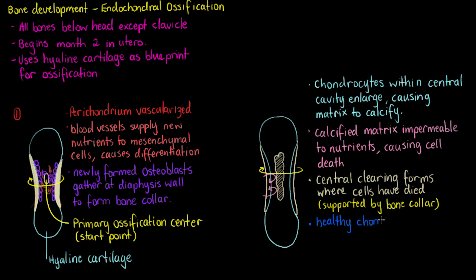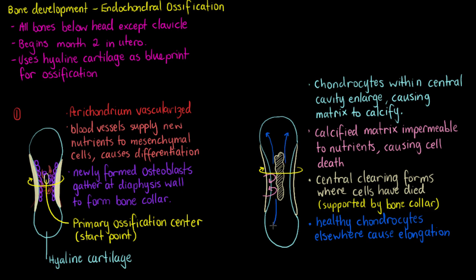While this is all occurring at the primary ossification centre, there are still healthy chondrocytes further toward the distal ends of the bone that are still producing cartilage matrix and are responsible for elongating that structure. The bone is still getting longer with the deposition of more cartilage.